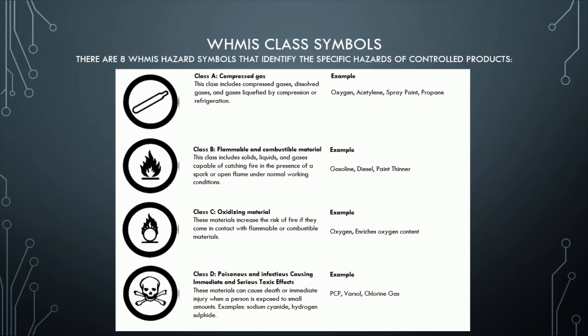Class B: Flammable and Combustible Material. This class includes solids, liquids, and gases capable of catching fire in the presence of a spark or open flame under normal working conditions. Examples: gasoline, diesel, paint thinner.